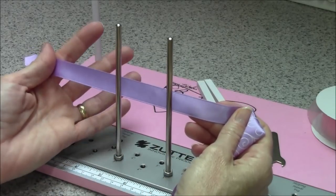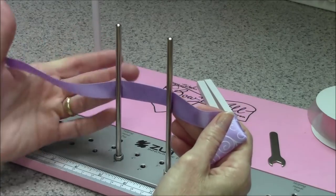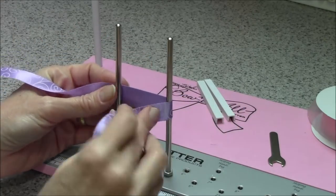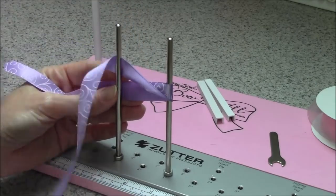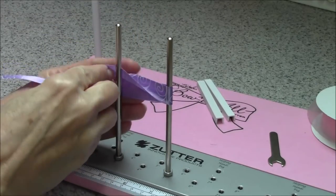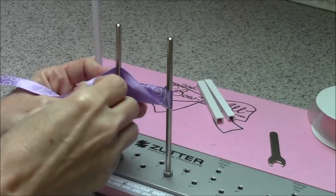We're starting out the same way. You leave as much of a tail as you want on your left side, come around the right peg, and as you're going through the center you're going to do a little half twist so that as you're coming around the left peg, the good side of the ribbon is showing again.